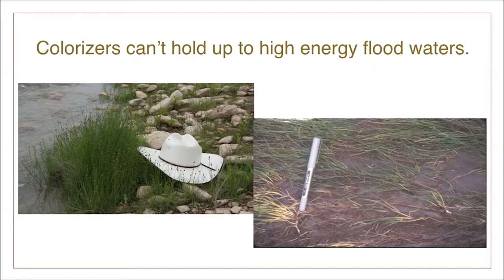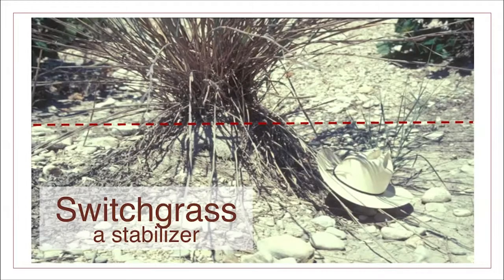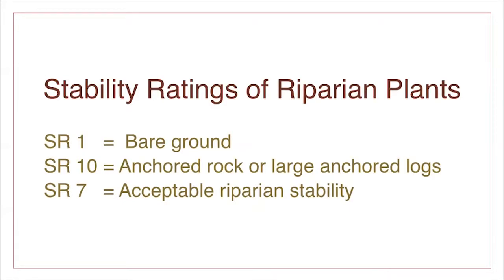Their importance is in setting the stage for stabilizing plants to grow. On the other hand, switchgrass is a super-strong stabilizer. In the example shown here, it has held together portions of a stream bank against recent floodwaters. Riparian plants can be further defined by their stability rating. Colonizers have lower stability ratings than stabilizer species. A stability rating of 1 is equivalent to bare ground, and a stability rating of 10 is equivalent to anchored rock.